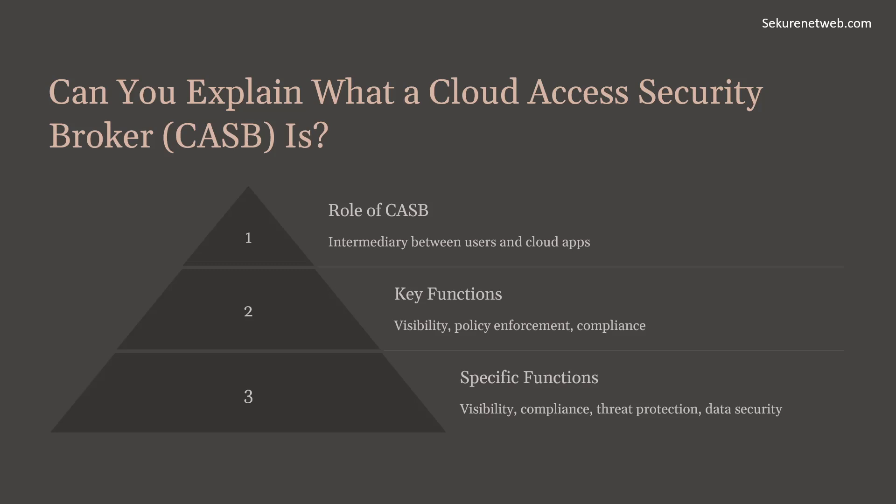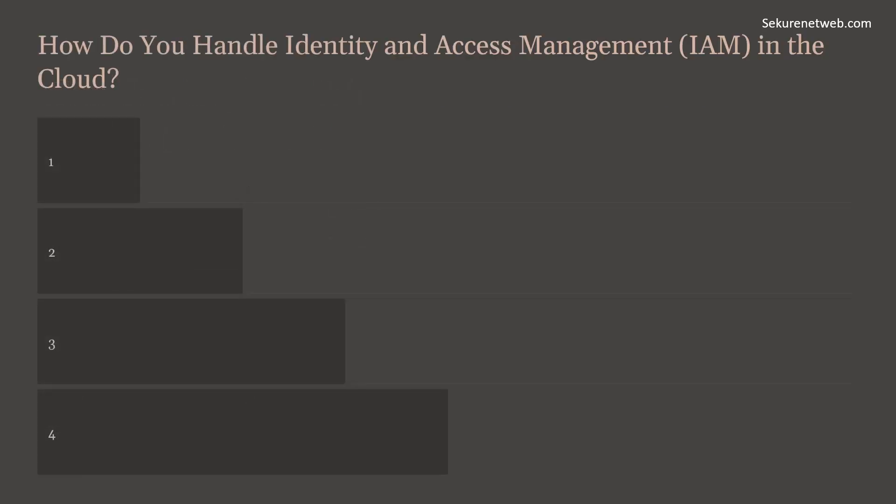For data loss prevention, a CASB prevents sensitive data from being shared or leaked through cloud services. Popular CASB solutions include McAfee MVISION Cloud, Microsoft Cloud App Security, Netskope, and Symantec CloudSOC. Understanding the role of CASBs demonstrates your knowledge of advanced security solutions in the cloud ecosystem and how they help enforce security policies and protect data across multiple cloud services.